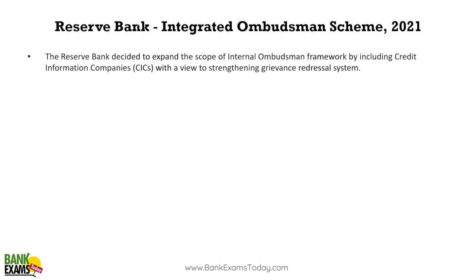RBI's Integrated Ombudsman Scheme — this is a recent RBI circular. It is now expanded as an internal ombudsman scheme. The Credit Information Companies (CICs) are also now included in the Integrated Ombudsman Scheme. Previously there were separate ombudsmen for RRBs, commercial banks, and small finance banks, but now RBI has integrated them. All RBI-regulated entities, including CICs, are now under the scope of the Integrated Ombudsman Scheme.